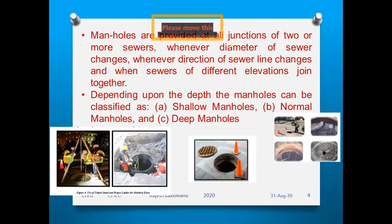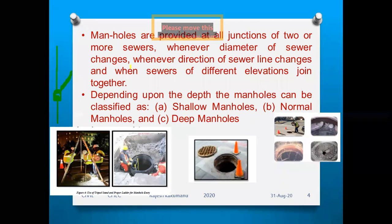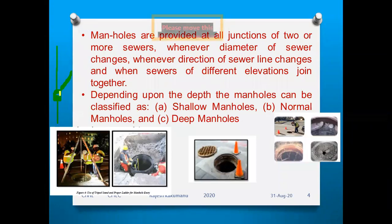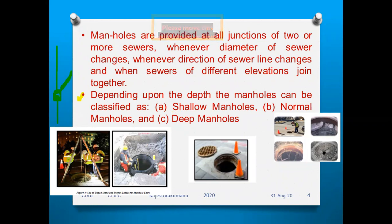Manholes are provided at all junctions of two or more sewers. For example, when multiple sewer lines from different areas converge, a manhole is placed there. They are also placed whenever the diameter of the sewer changes, the direction changes, or sewers of different elevations join together. Depending on depth, manholes are classified as shallow manholes, normal manholes, and deep manholes.